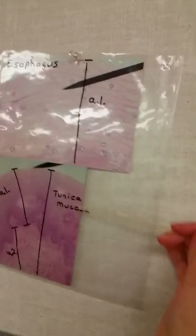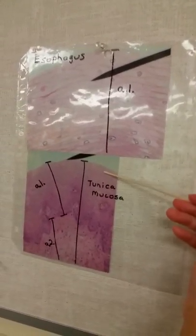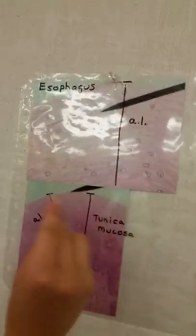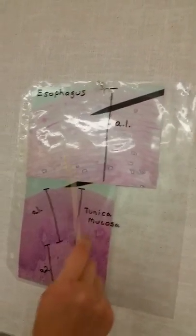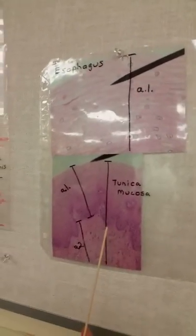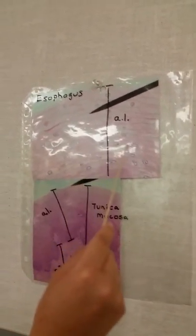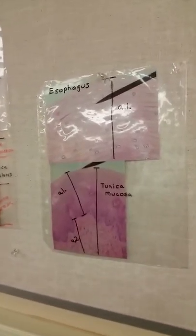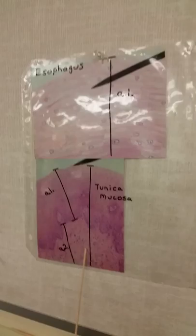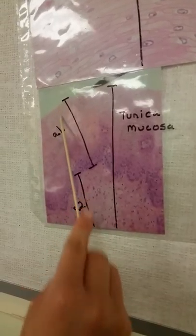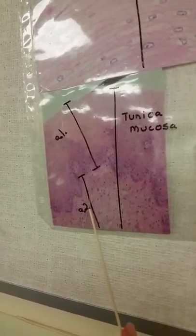Moving on to the esophagus. This is the tunica mucosa. And this is a stratified squamous epithelial tissue, non-keratinized, which is that. And then the connective tissue would be between here, between the cells. For a lower power, it would be right here for the stratified squamous epithelial tissue, right here all the way to here. And the connective tissue.